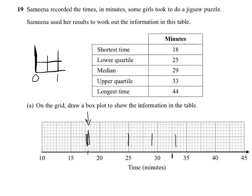And then finally, the longest time, forty-four. Forty-four is going to be two squares before forty-five. And there we have our five marks, and that's just aggressively drawing the box in the middle. Again, do this with a ruler in the real exam, and drawing the stems out to meet. That's the box plot to show the information about the jigsaw puzzle.